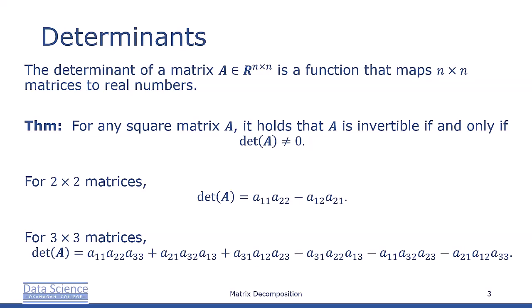Here's a theorem that links the determinant to invertibility: for any square matrix A, A is invertible if and only if det(A) ≠ 0.